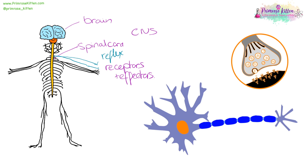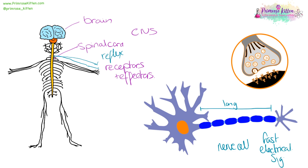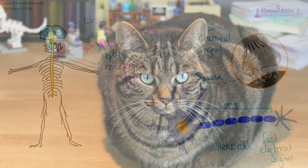The nerve cells involved in this are very long, and this cell body can send a fast electrical signal. However, when we come to transfer the signal from one nerve cell to another nerve cell, things slow down a bit because they have to cross a synapse. This is going to be a slow chemical signal, as the chemical has to be released, diffuse across the gap, be picked up, and then initiate another electrical signal.